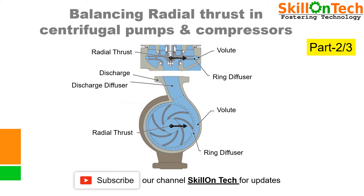It is of two types: one is radial thrust, the other one is axial thrust. Today I will explain how to balance radial thrust in centrifugal pumps and compressors, and what measures are to be taken to balance this radial thrust.